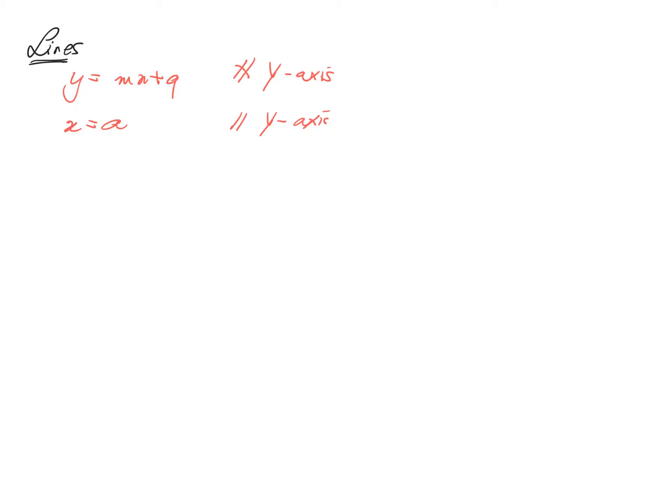In the formula y equals mx plus q, we call m the slope of the line and q is the intercept.